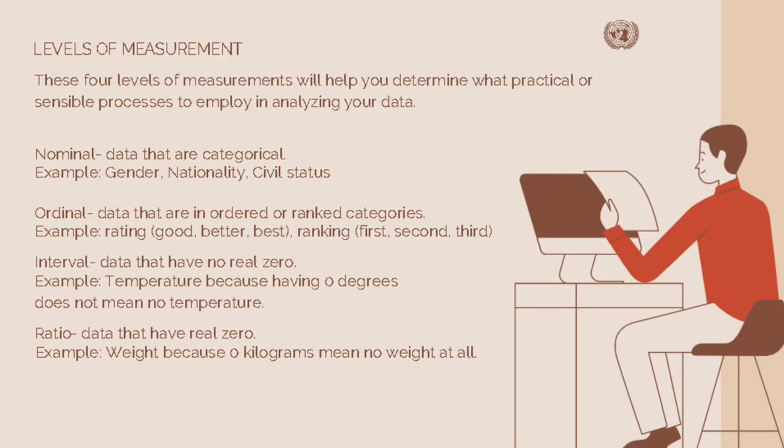Next is the level of measurement. These four levels of measurement will help you determine what practical or sensible processes to employ in analyzing your data. First, we have nominal — this is data that are categorical. Examples include gender, nationality, or civil status.